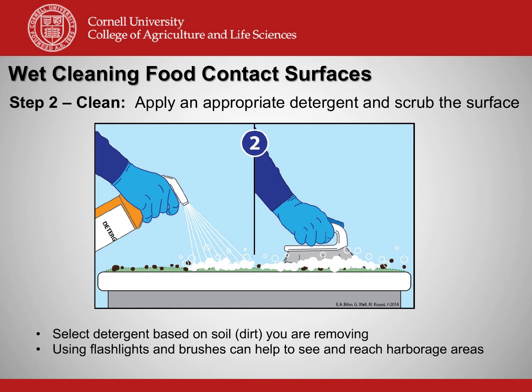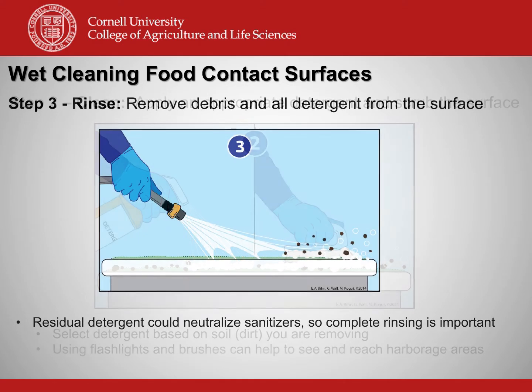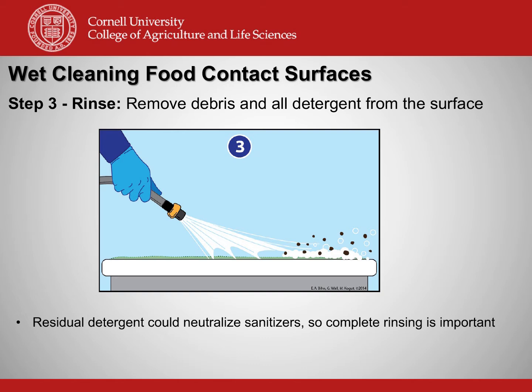Removing the soil and other organic buildup can help minimize the formation of biofilms. Step three of wet cleaning is to rinse the surface with clean water that has no detectable generic E. coli. Make sure all of the soil, debris, and detergent is removed. Residual detergent can neutralize sanitizers, so make sure you rinse completely.